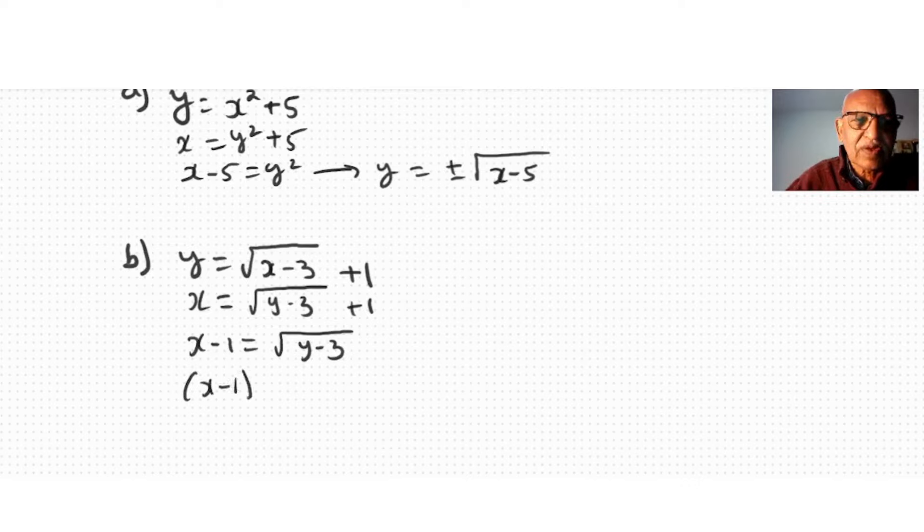We square both sides in order to find y. If I square the square root, I get y minus 3. Isolate y: y equal to x minus 1 square plus 3. And that's the inverse.